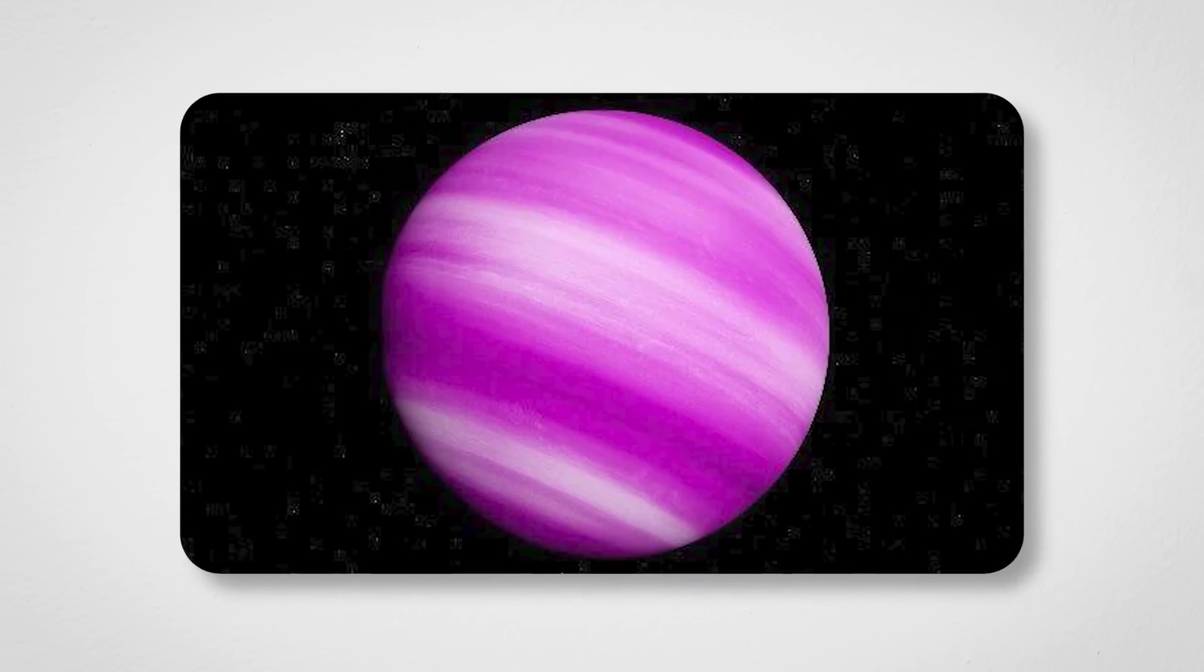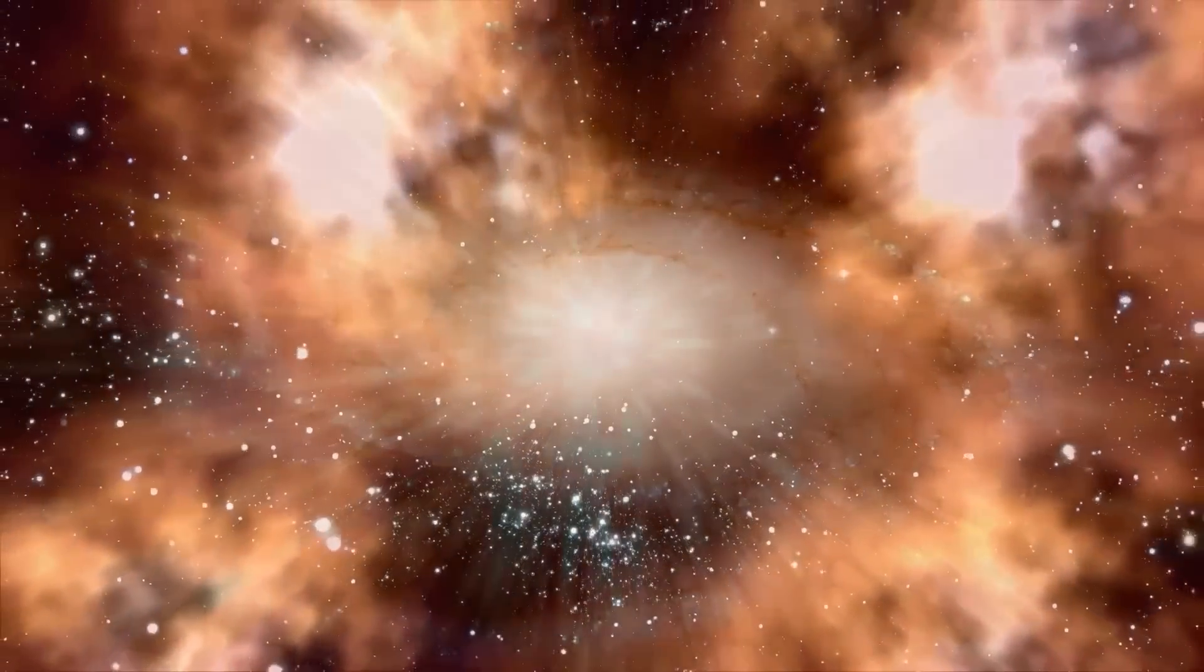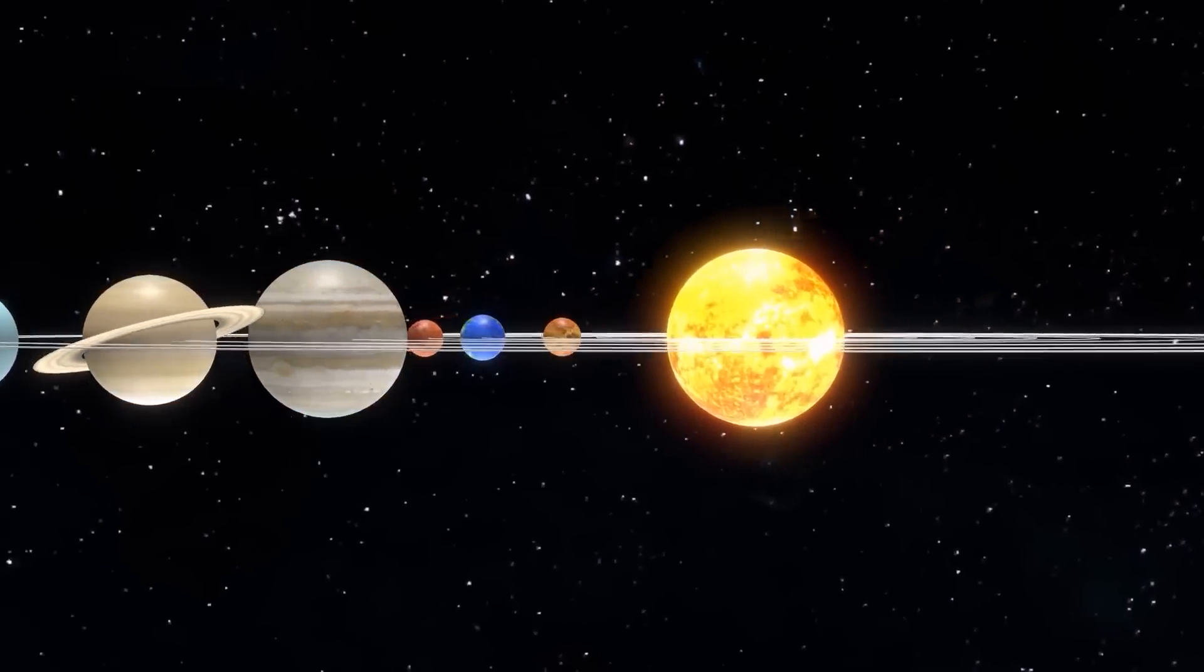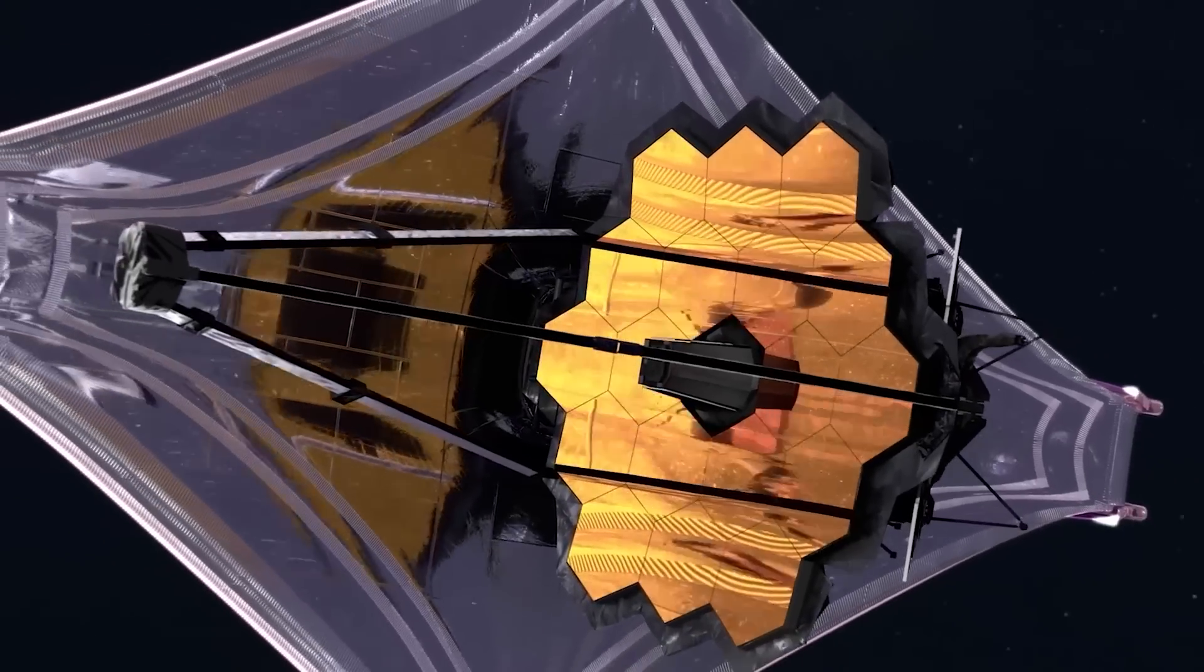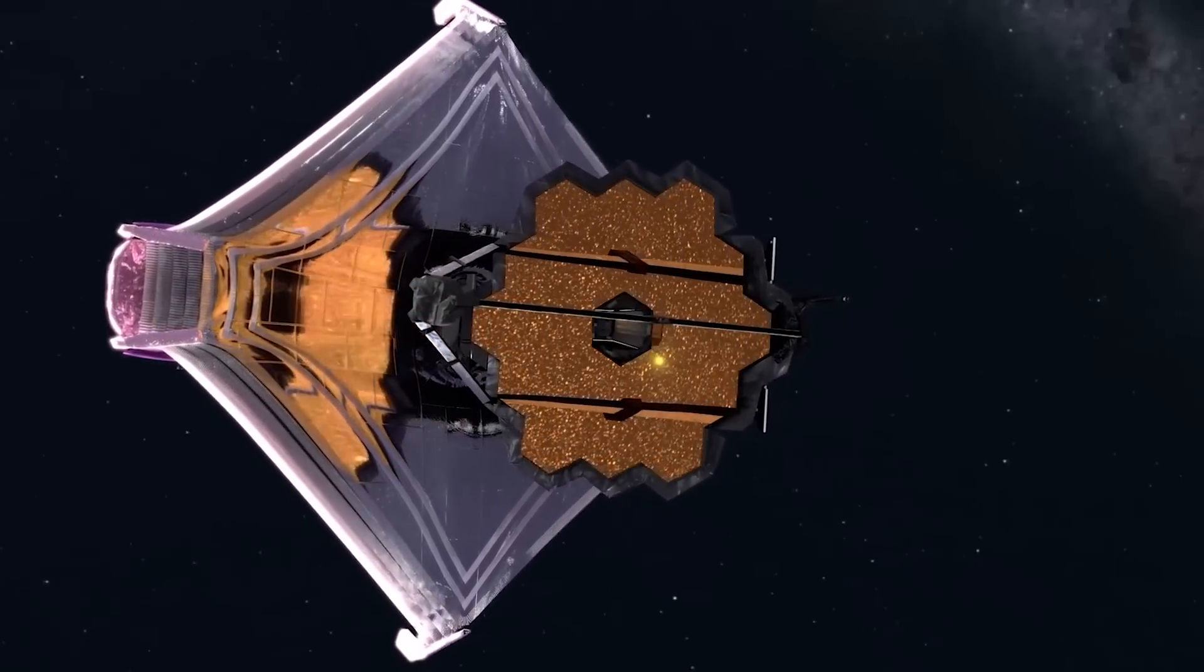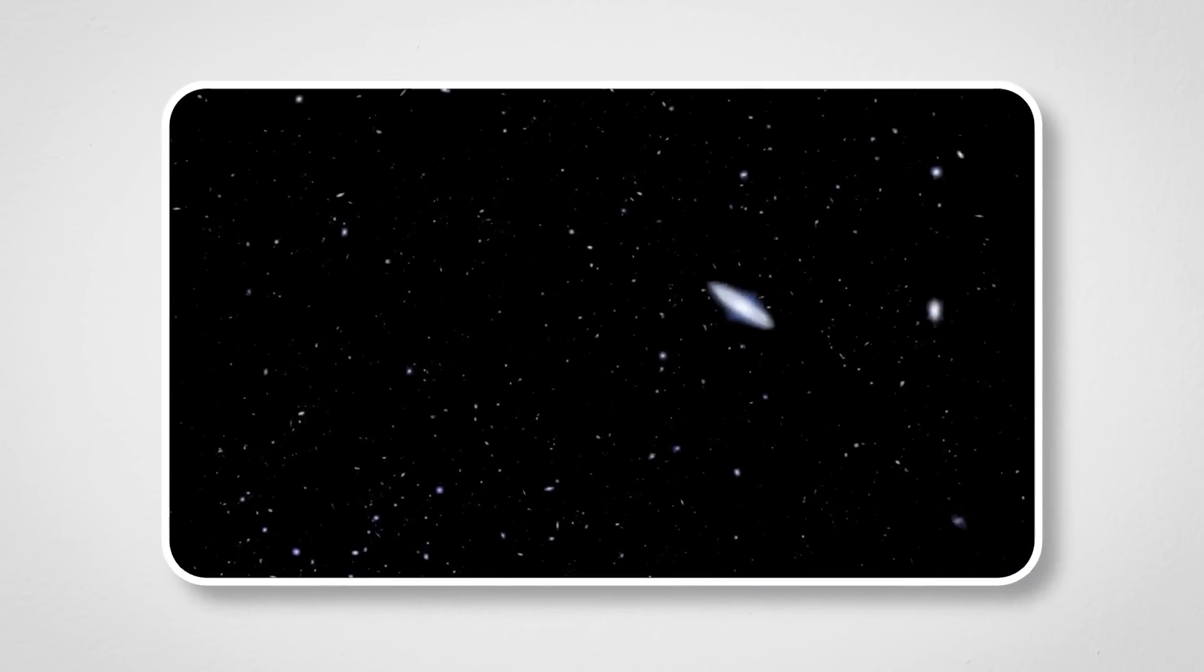Another intriguing aspect is Gliese 504b's orbit. It's located about 43 astronomical units from its star, 43 times the distance between Earth and the Sun. To compare, that's farther out than Neptune in our solar system. Such an orbit raises fascinating questions. Did the planet form in this distant position, or was it pushed out by gravitational interactions with other celestial bodies? Unraveling this mystery could help us understand the complex dynamics that shape planetary systems.